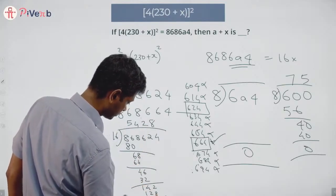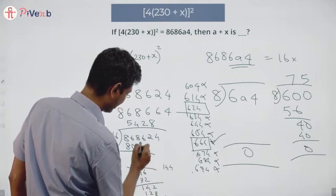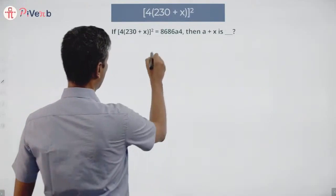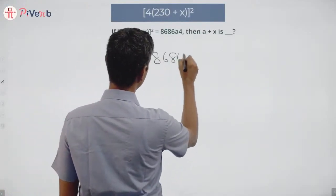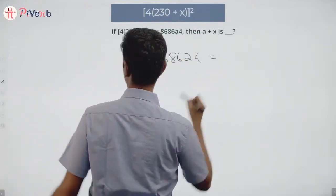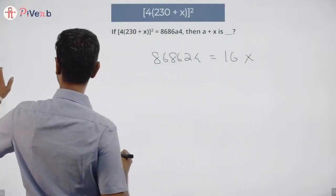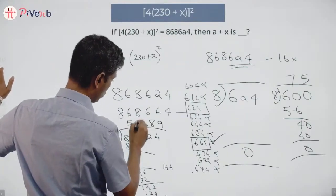142, 16 into 9 is 144, 16 into 8 is 128. I have 144 remaining, so I have 868624 to be 16 times 54289.